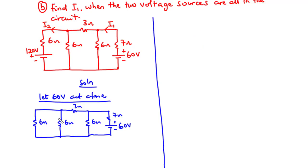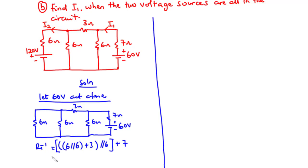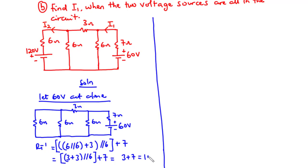So RT' = (6 ∥ 6) + 3, all in parallel with 6, then plus 7. Computing: 6 ∥ 6 = 3, so we have 3 + 3 = 6, then 6 ∥ 6 = 3, and 3 + 7 = 10 ohms. Therefore RT' = 10 ohms.